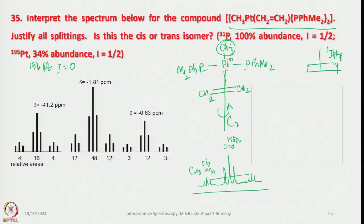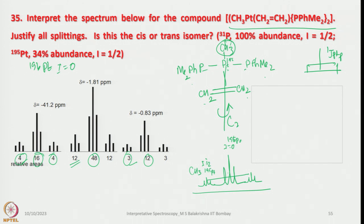This is the Pt-H coupling pattern. The same pattern appears for all signals, but with different numbers of protons: 3 for CH3, 12 for P(CH3) groups, and 4 for CH2. All signals show a central peak from I = 0 platinum and satellites from 195Pt. The ratio of signals is 3:4:12, which simplifies consistently. So this is the 1H NMR spectrum representing CH3, ethylene (4 protons), and the phosphine methyls.